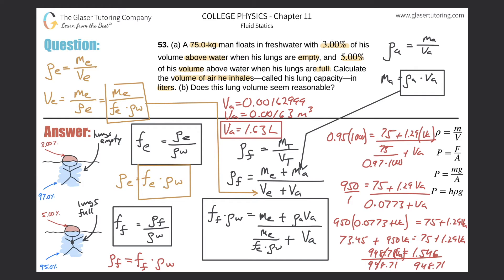This is technically the right way to approach it. You have to take into account both the mass of the air inhaled and the volume of air inhaled because his lungs are beneath the water — they are submerged. In a previous problem, a metal mass was added to the top of a floating cork and only the mass was taken into account, not the volume, because it wasn't submerged.